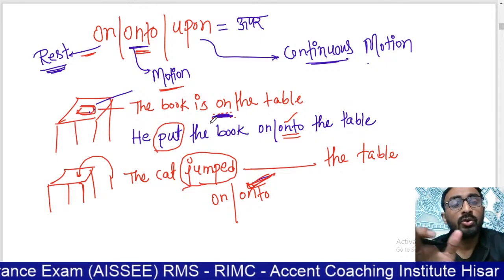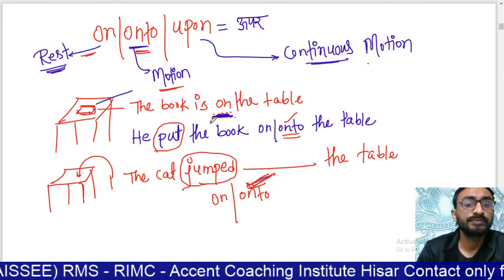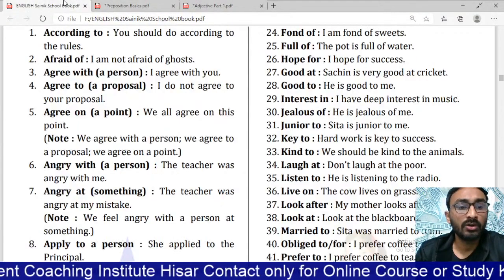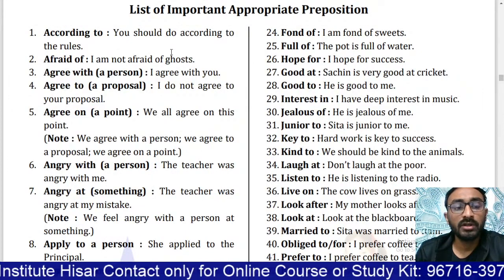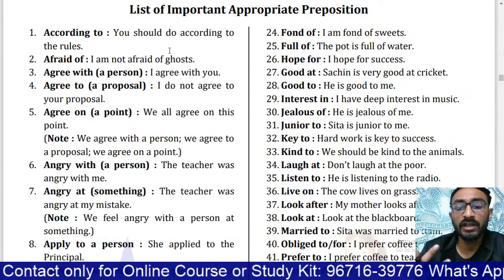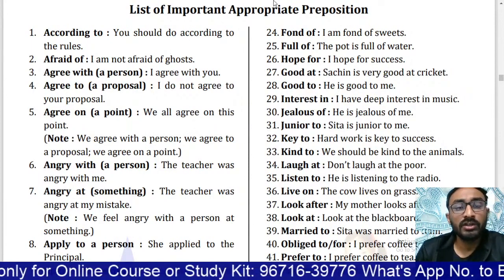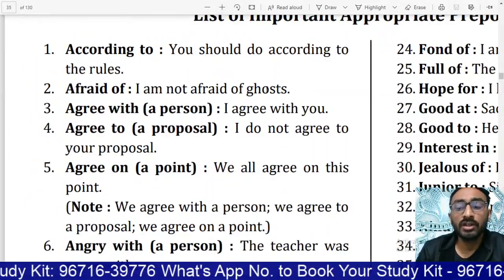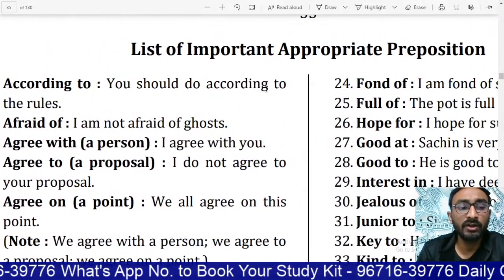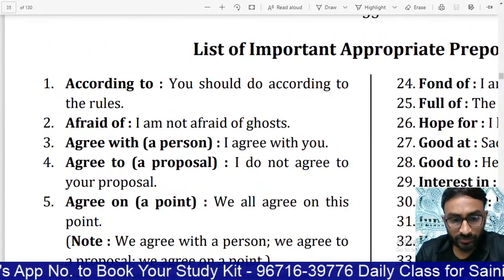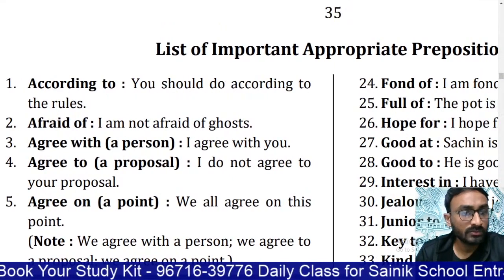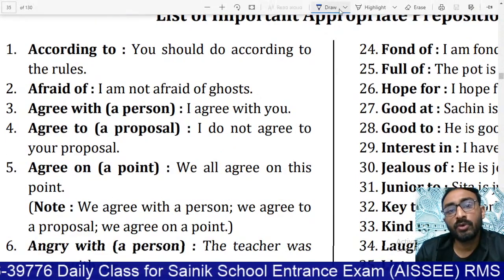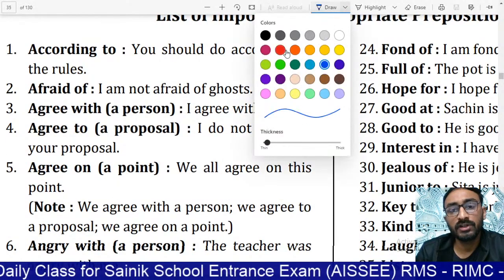So 'on,' 'onto,' and 'upon' should be clear now. Now I am going to give something very important. If you have our English book in the study kit, there is a list of important prepositions which are continuously asked in competitive school entrance exams. If you don't have the study kit, you can order it — the number is given below.